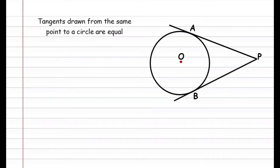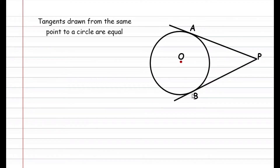Hey guys and welcome to this video. In this video we'll be proving the theorem that states that tangents drawn from the same point to a circle are equal. So basically, these two tangents PA and PB, because they've been drawn from the same point to the circle, are equal in length.